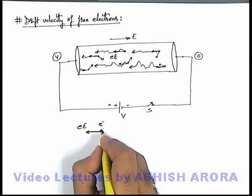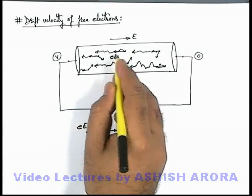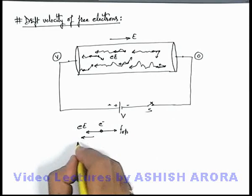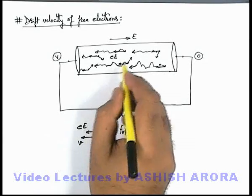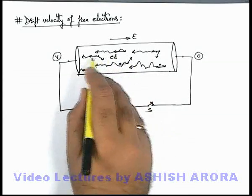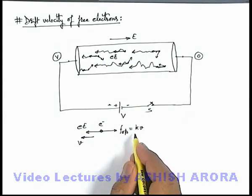And will also experience a force which is the opposing force due to continuous collision on electrons opposite to the direction of their motion. If the speed of electron is v, due to continuous collisions the wet friction the electron will experience can be written as kv which is directly proportional to the speed.